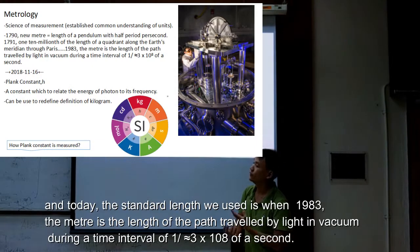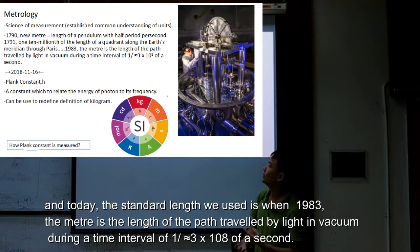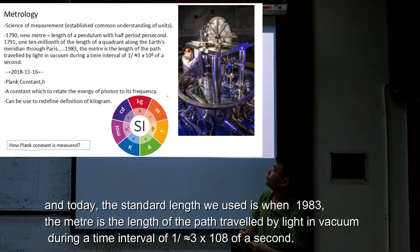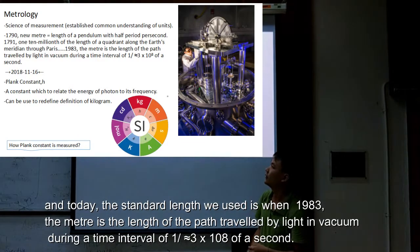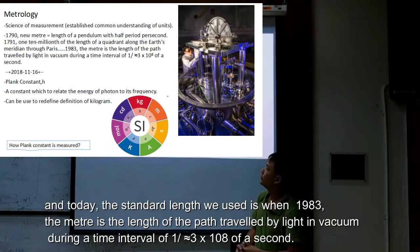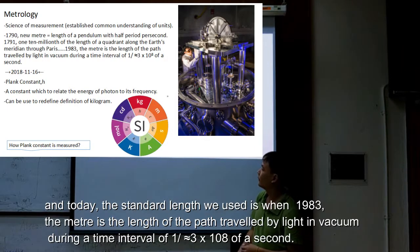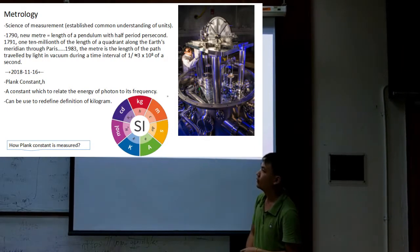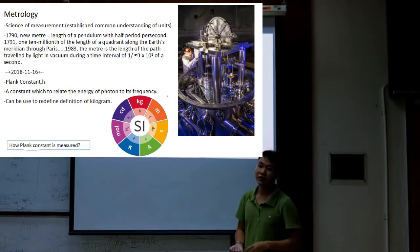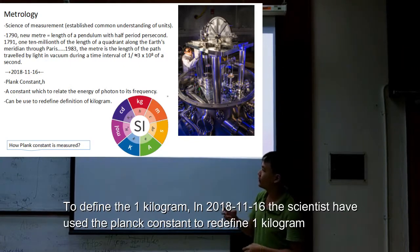Today we use the standard length of 1983. The meter is the length of the path traveled by light in vacuum during a time interval of 1 over 3 times 10 to the power of 8 of a second. Now, we need to define the kilogram.